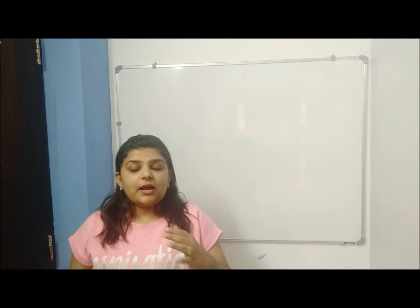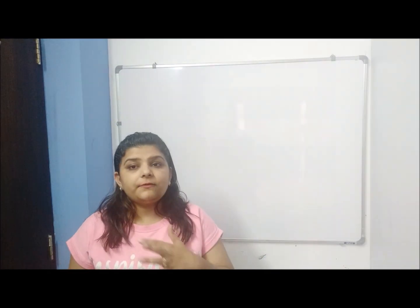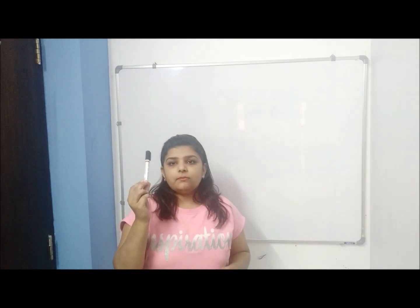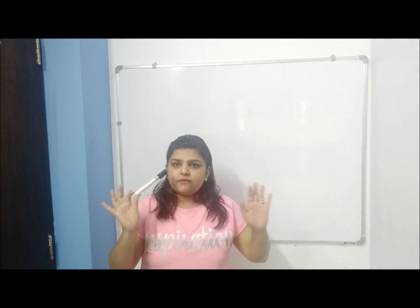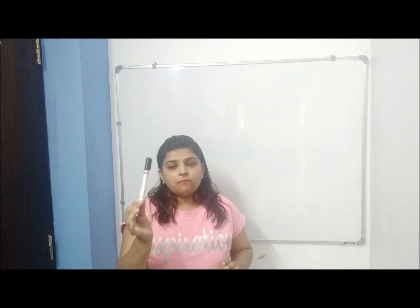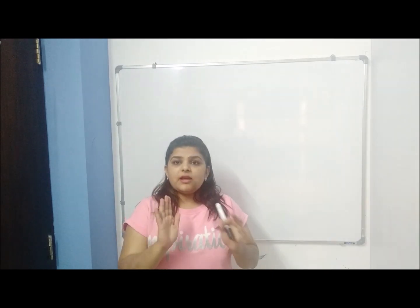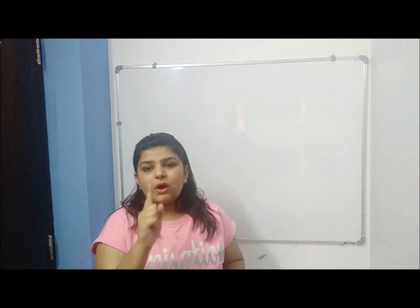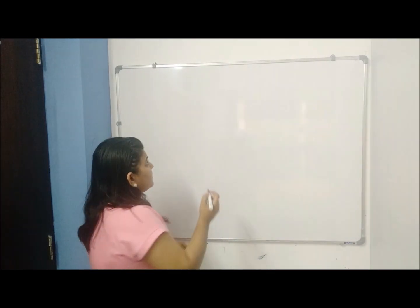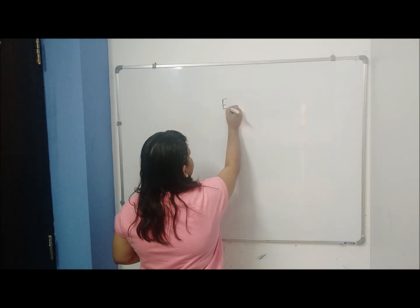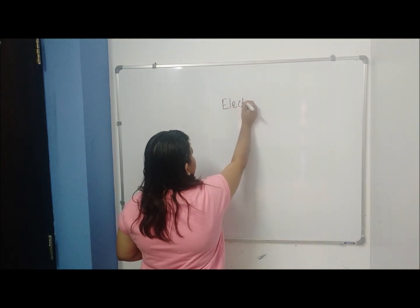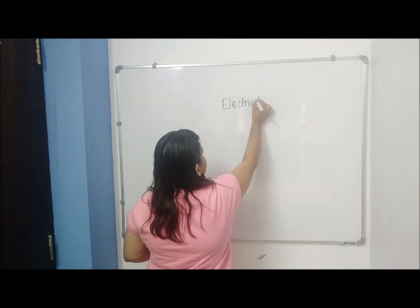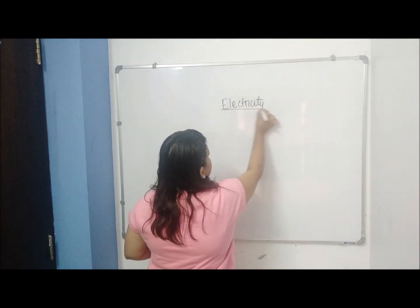So let us take a small example and understand the difference between these types of overheads. Let us say I am making these markers — I have a company who is making these markers. In my company, for simplicity purposes, let us say there is only one type of overhead, which is electricity. So I have only one indirect expense which is electricity.